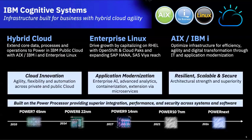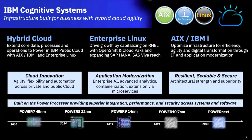In IBM's cognitive systems business unit, we're organized across three pillars: hybrid cloud, enterprise Linux, and AIX and IBM I. Hybrid cloud is essentially our new CEO Arvind Krishna's prerogative. What we're trying to do is take the traditional IT assets that enterprises have and seamlessly integrate them with assets in the public cloud. You can develop an asset inside the public cloud and we provide pathways to bring that on-premises.